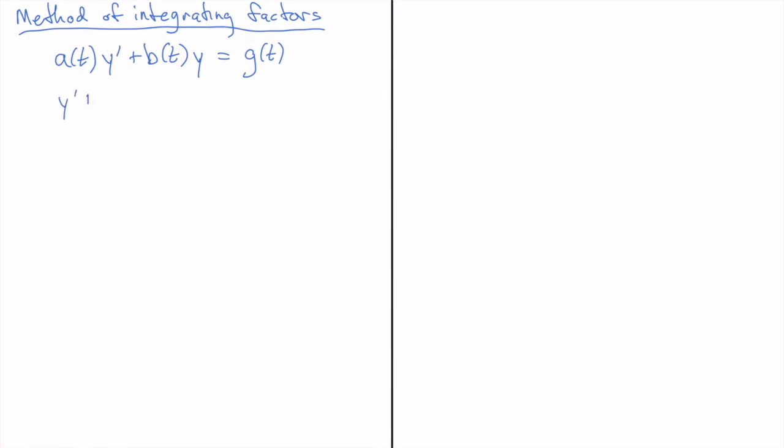So when we divide through by a of t we get y prime plus b of t over a of t times y equal g of t over a of t